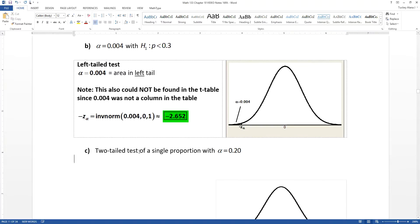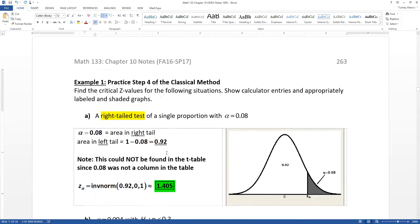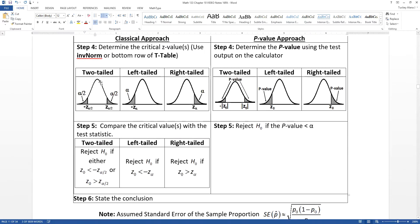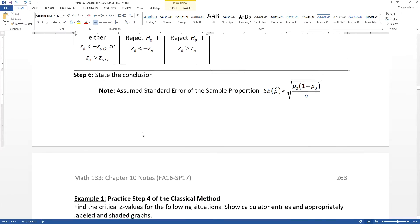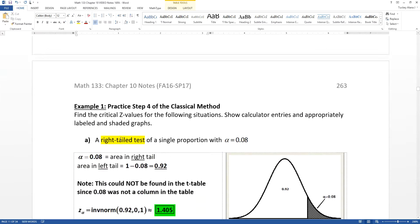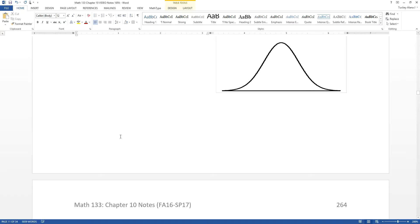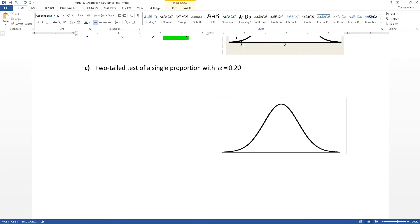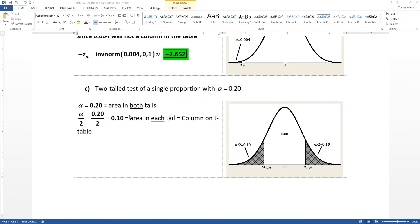Now let's do the last one. The last one is a two-tailed test with alpha equal to 0.20. So a two-tailed test is a little bit trickier because you're going to have to take that alpha value and cut it in half to draw this picture. And you're going to label each side with its own alpha over 2. Since the two tails is 0.20, that means that each tail on its own is 0.10.